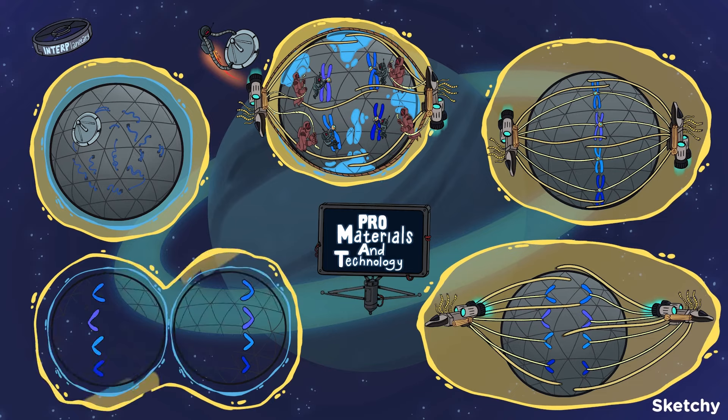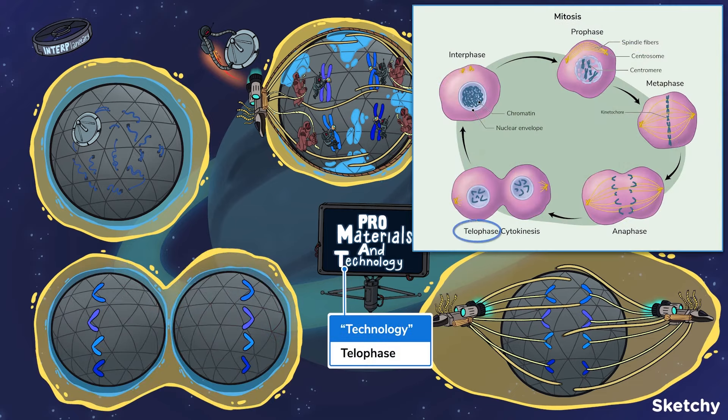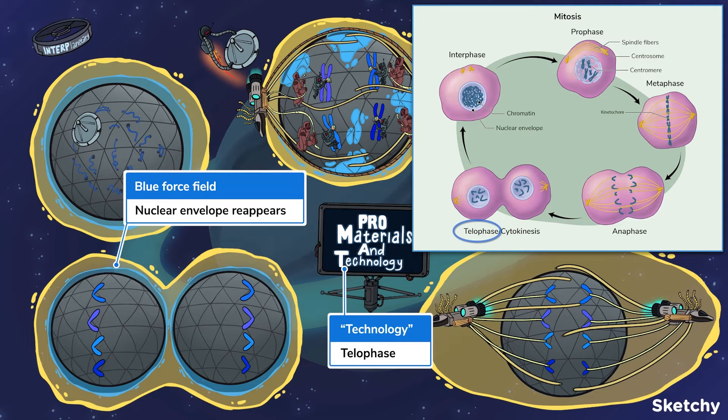And finally, we get to telophase. In telophase, the spindle fibers disappear and the nuclear envelope forms again.